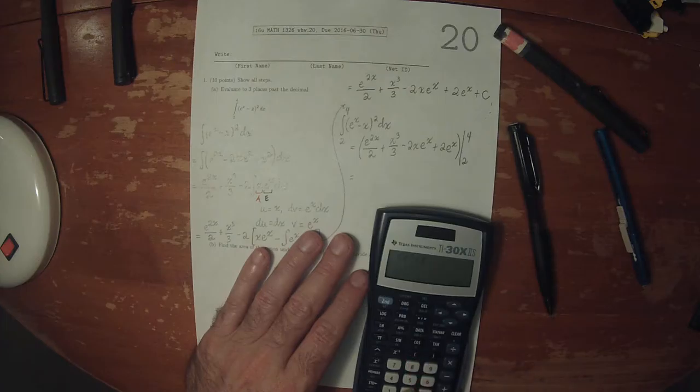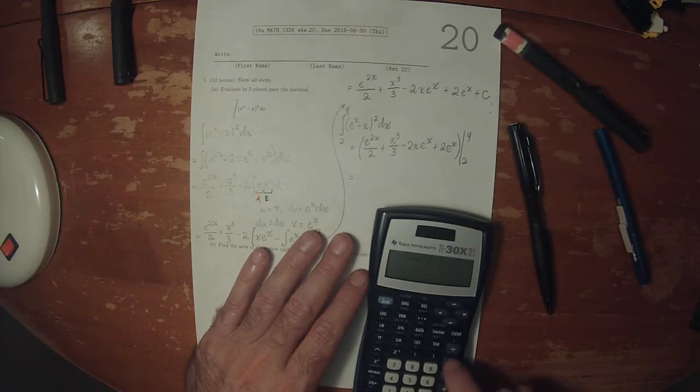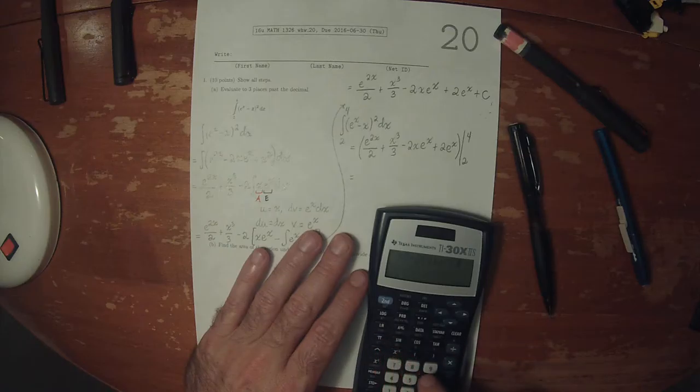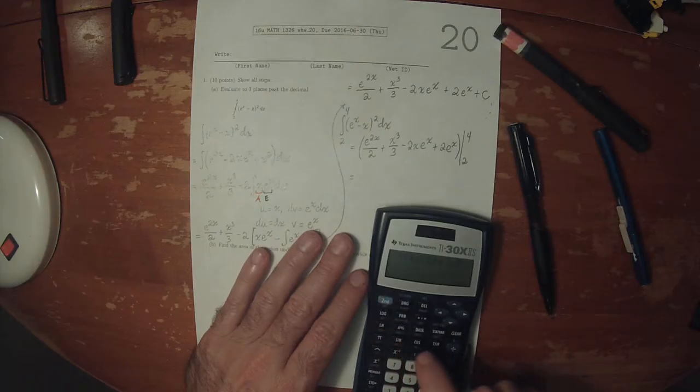E to 2 times 4 over 2 plus 4 times 2 times over 3, minus 2 times 4 times exponential of 4, plus 2 times exponential of 4.